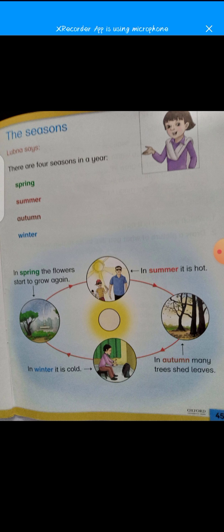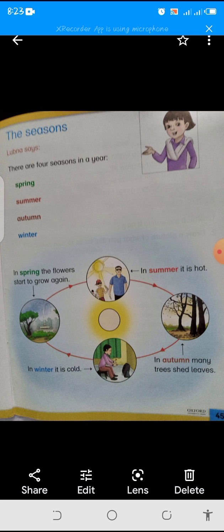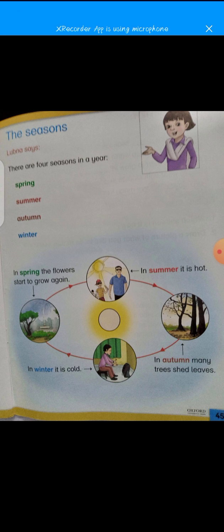Now take out your book and open page number 45. In your book there is a topic: The Seasons. Seasons kya hote hai — there are four seasons in a year. 1 saal mein 4 seasons aate hai.